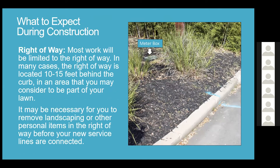Most work will be limited to the right-of-way, which is located about 10 to 15 feet behind the curb - an area you may consider to be part of your lawn, pretty much where the meter box is. It may be necessary to remove landscaping or other personal items in the right-of-way before your new service lines are connected. It's on a case-by-case basis, so if you have questions, feel more than free to come outside and speak to us, and I'll gladly address every scenario differently.